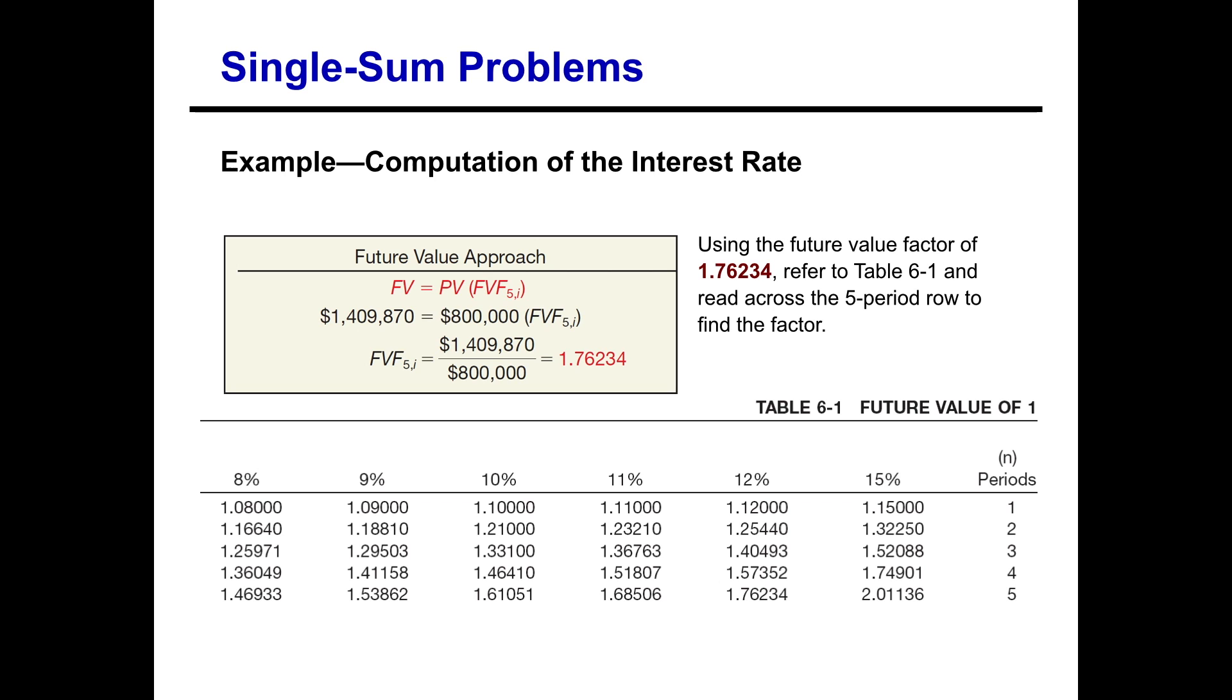And we know the number of periods is five. So if we start with the number of periods are five and then we scan over until we find 1.76234, we find that the interest rate we will need to get to end up with a little over $1.4 million investing $800,000 today for five years, we would need to get 12% on our money. Now this was using the future value approach.